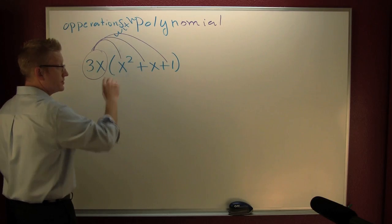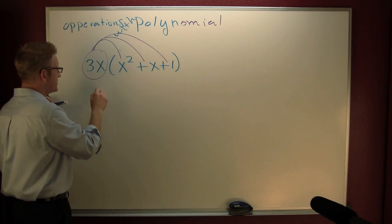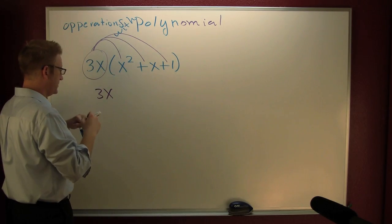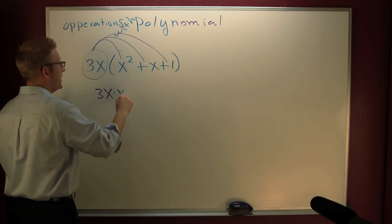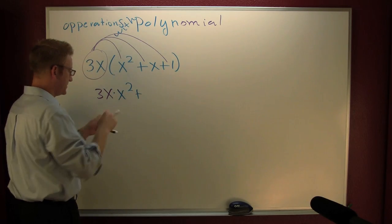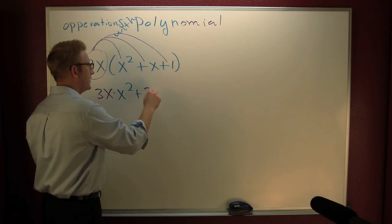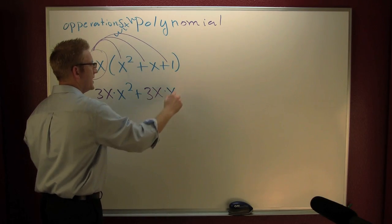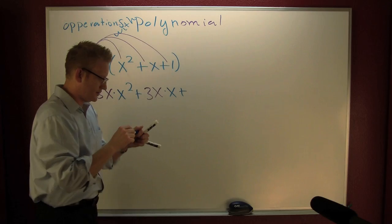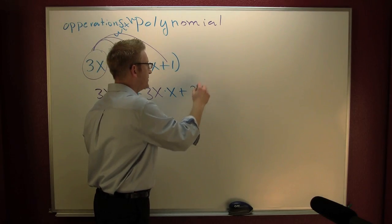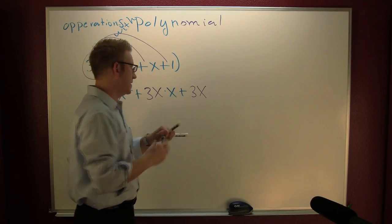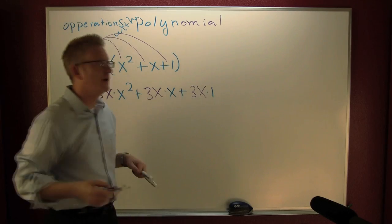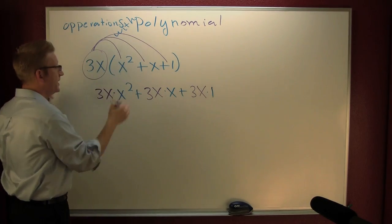I'm gonna take 3x and multiply it by every term in that trinomial. So I got a 3x times an x squared, plus a 3x times that x, plus a 3x times that one. Let's clean it up here.